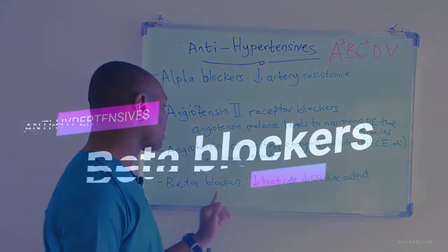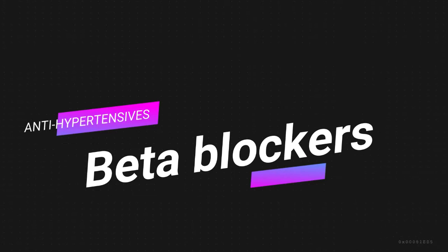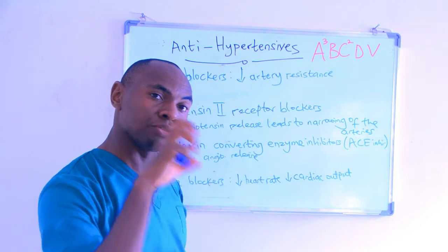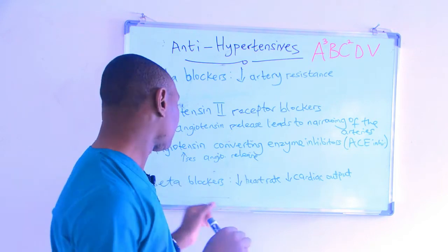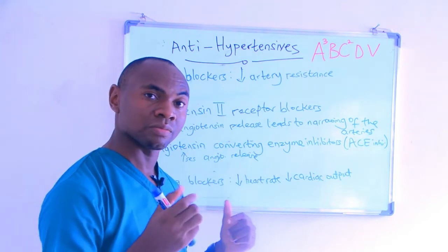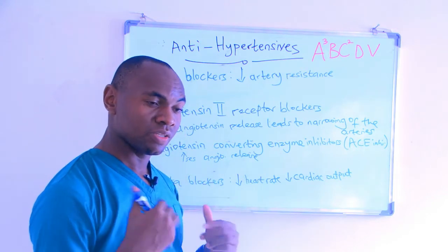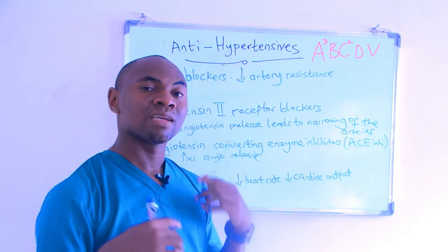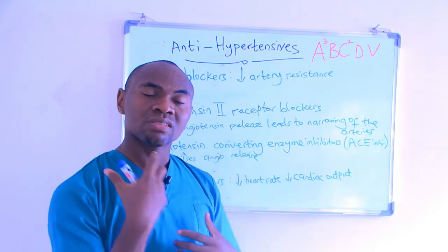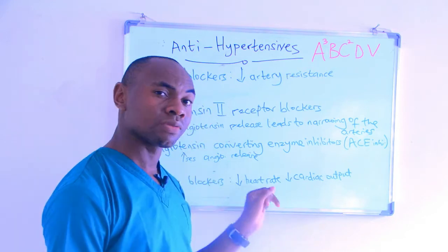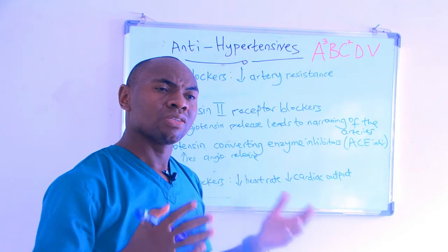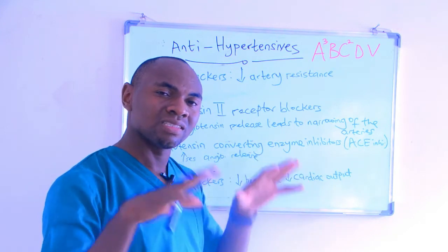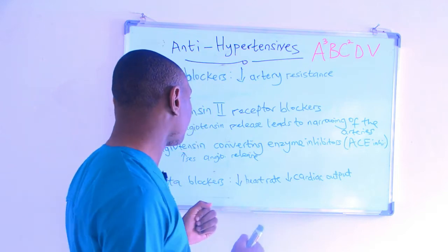The B stands for beta blockers. Beta blockers are drugs that stop, prevent, or reduce stimulation of the beta adrenergic system in the body. When beta adrenergic stimulation occurs, the heart increases in heart rate and contractility. These drugs help reduce heart rate and the force with which the heart beats, resulting in a decrease in high blood pressure.